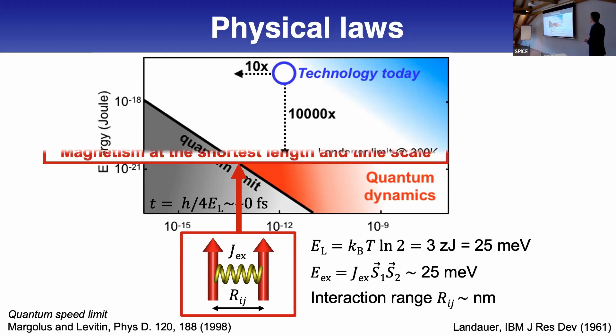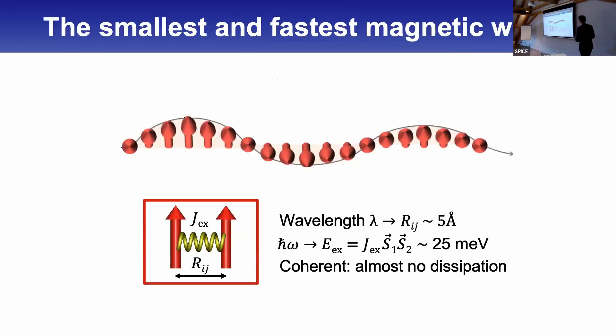That's what we aim for, and the working horse for this talk is the magnetic waves with wavelength as short as the distance between two spins, working with magnons at the edge of the Brillouin zone. The interaction range is very short, the energy scale is the highest, and if you manage to keep this coherent, you have almost no energy dissipation.